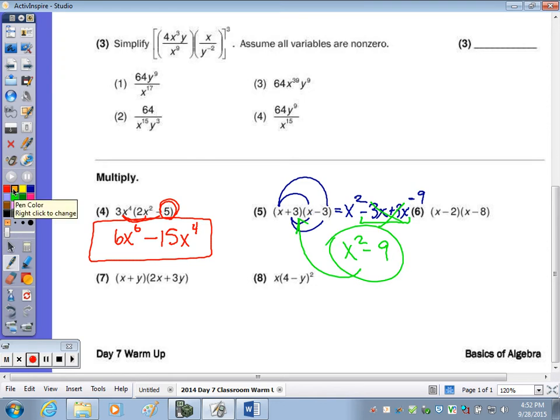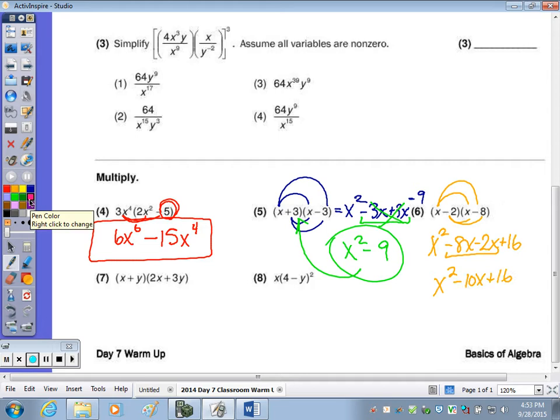Number six, x times x is x squared, x times negative eight is negative eight x, negative two times x is negative two x, negative two times negative eight is positive sixteen. Combining your two middle terms, again, the binomials are not the same, but opposite signs, so they're not going to cancel minus ten x plus sixteen. We've already been mentioning, to do these quick products in our head, that this number here is always the sum of these two numbers within your parentheses, and this number here is the product of those two numbers. So we're factoring, I want to know what multiplies to sixteen that adds or combines to a negative ten.